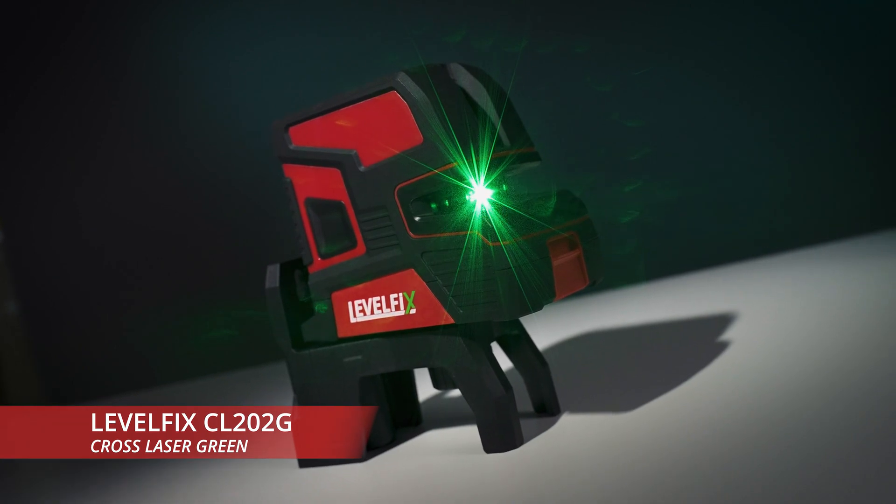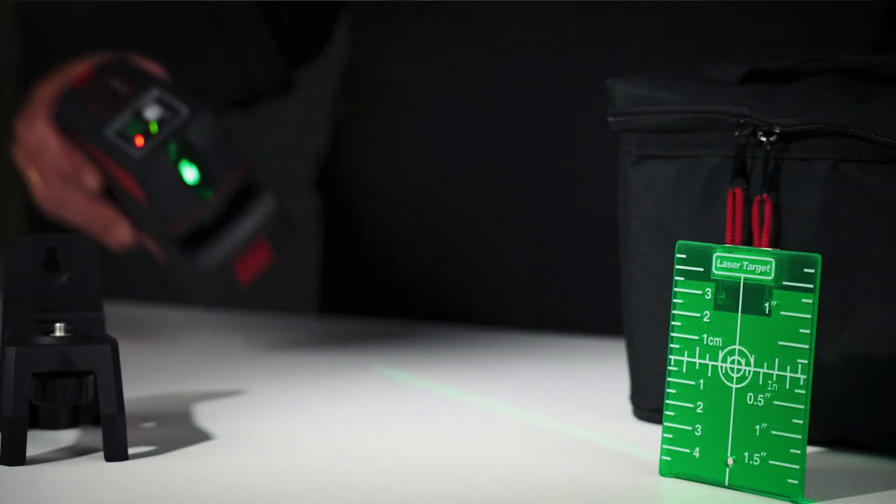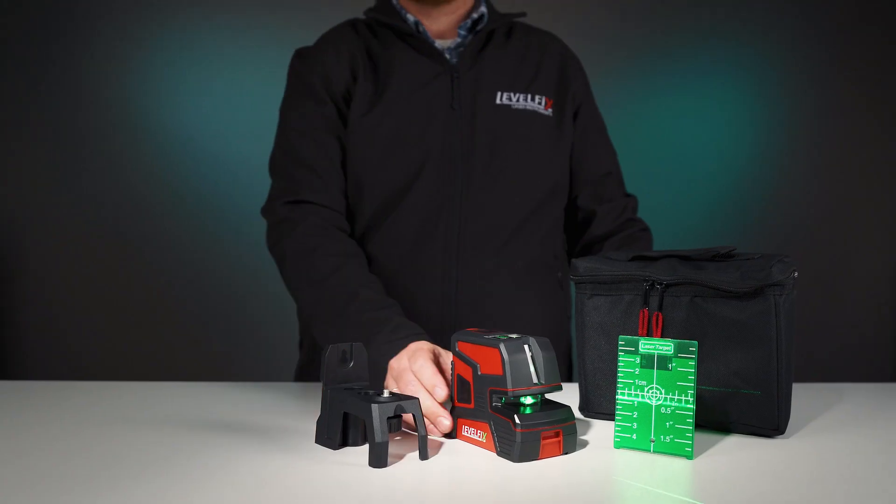The Levelfix CL200 2G is a green crossline laser. The laser comes with a wall bracket and target plate.